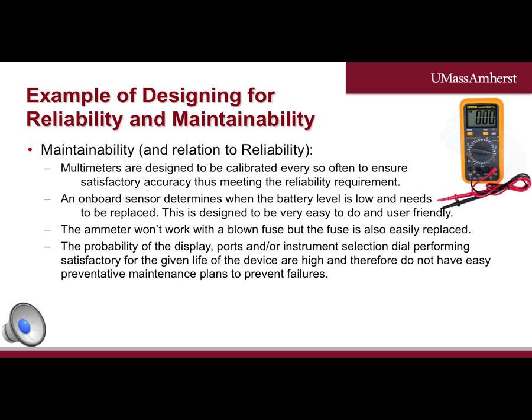Multimeters are designed to be calibrated every so often to ensure satisfactory accuracy, thus meeting the reliability requirement. An onboard sensor determines when the battery will need to be replaced, and the battery is easily swapped out. The ammeter won't work with a blown fuse, but the fuse is easily replaced, similar to the batteries. The probability of the display, ports, and instrument selection dial performing satisfactorily for the given life of the device are high, and therefore do not have easy preventative maintenance plans. In the case of failures of these components, corrective maintenance processes can be followed, but this will almost always require the multimeter being sent back to the manufacturer. This is useful for future designs as it gives the designer updated data on the probability of such things failing and can update the design for maintainability.